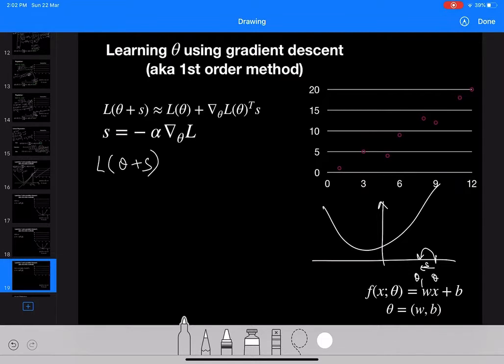What we do is we'll try to prove that L of theta plus s is less than equal to L of theta for a small enough alpha. So how we do it is we take L of theta plus s, we do a first order approximation by using Taylor series, so that would be L of theta plus gradient of L of theta transpose s.